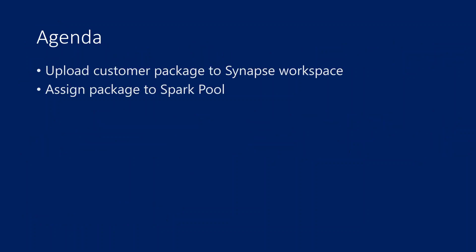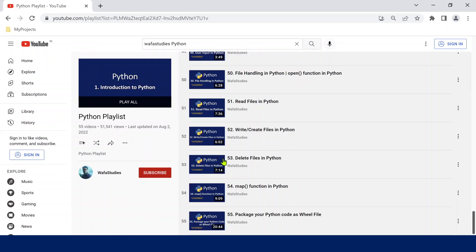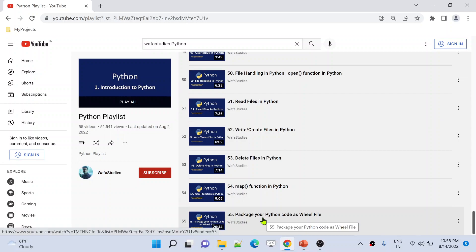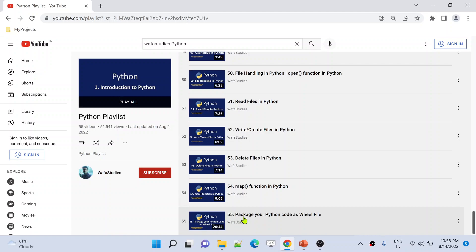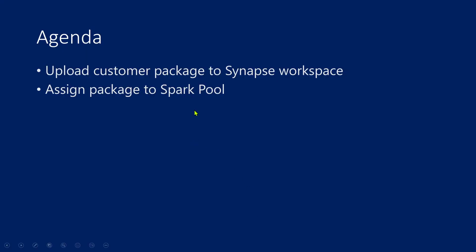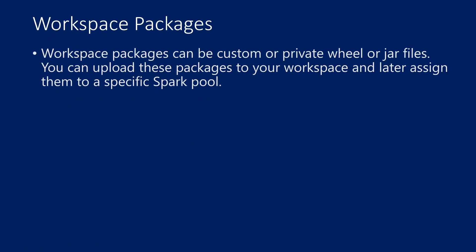In our past video, we have already discussed about how to manage library packages for Apache Spark. A package is nothing but code written in Python or Java language. If you want to share that code with other people in your team, you can create a package of that code and share it. Please watch my previous video and also my Python playlist, especially the 55th video, where I show how to create a package from Python code, which gives you a .whl extension file. Please watch part 52 of this playlist as well — then you will properly understand this video.